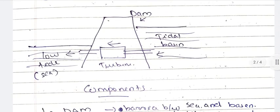During low tide, the water level goes down. You will be higher at the sea level. Water flows from the tidal basin through the turbine. The turbine uses this mechanical energy in the generator, and electricity is produced.